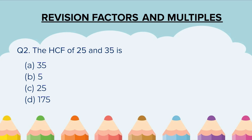Question 2. The HCF of 25 and 35 is: A. 35, B. 5, C. 25, D. 175.